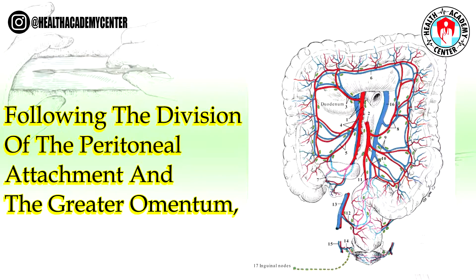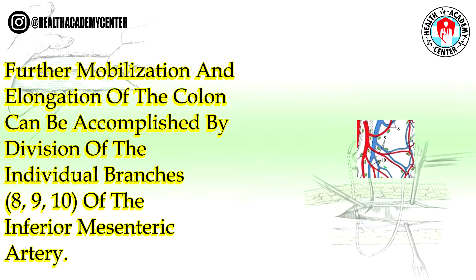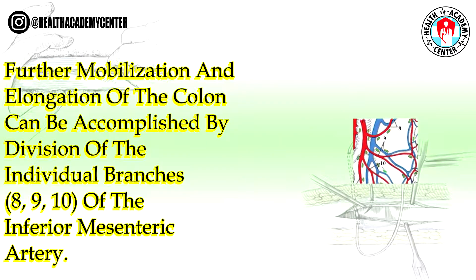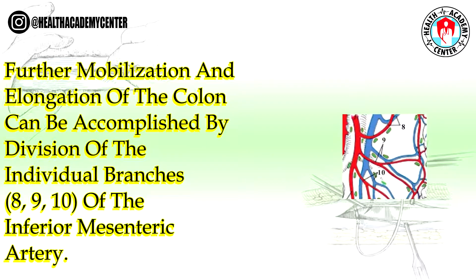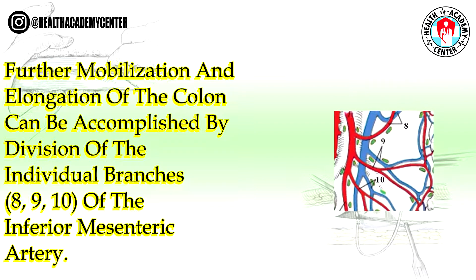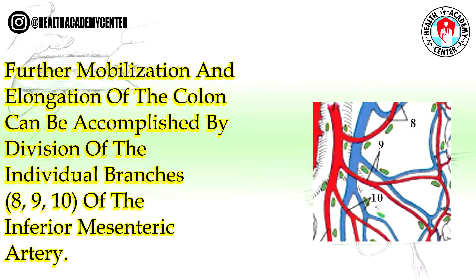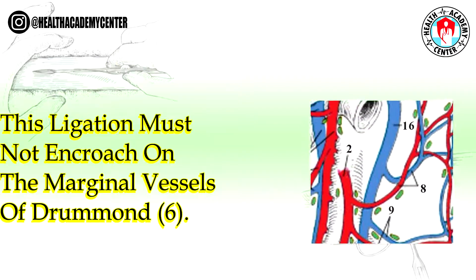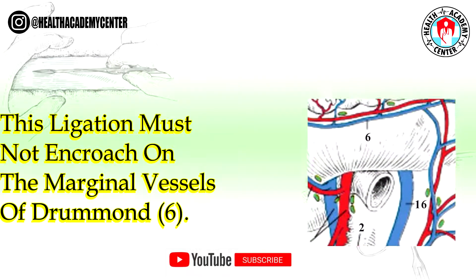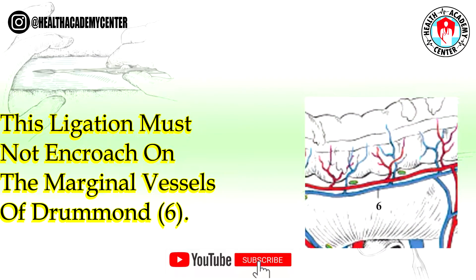Following the division of the peritoneal attachment and the greater omentum, further mobilization and elongation of the colon can be accomplished by division of the individual branches (8, 9, 10) of the inferior mesenteric artery. This ligation must not encroach on the marginal vessels of Drummond (6).